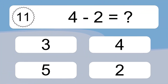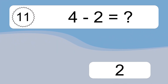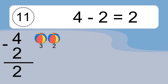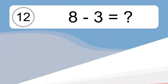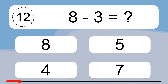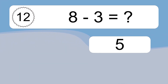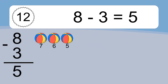4 minus 2 equals what? 4 minus 2 equals 2. Let's count it. 3, 2. 8 minus 3 equals what? 8 minus 3 equals 5. Let's count it. 7, 6, 5.